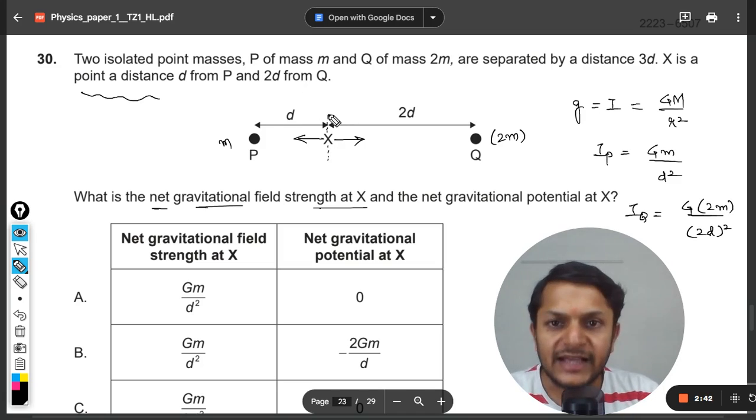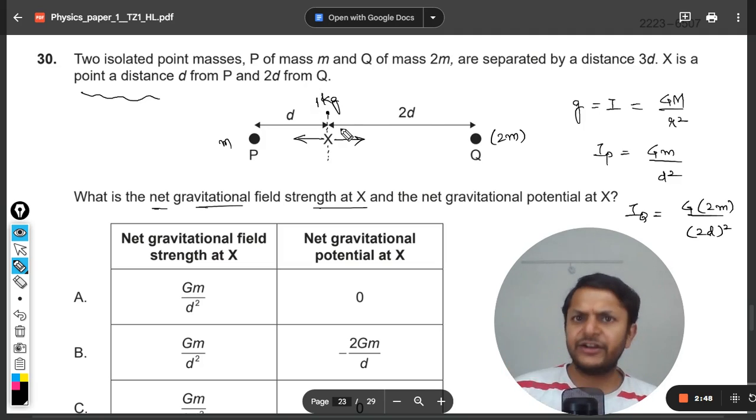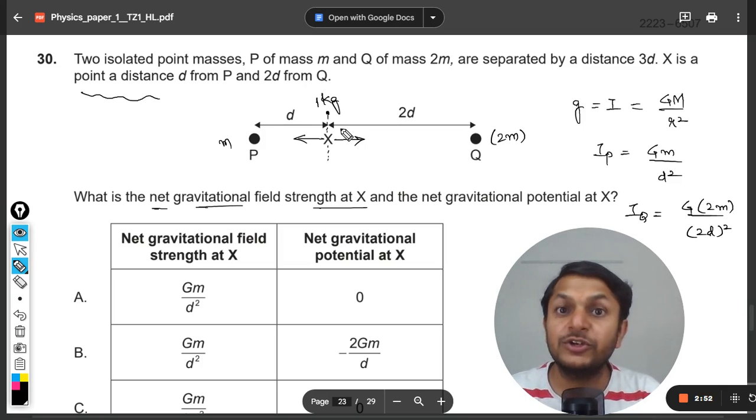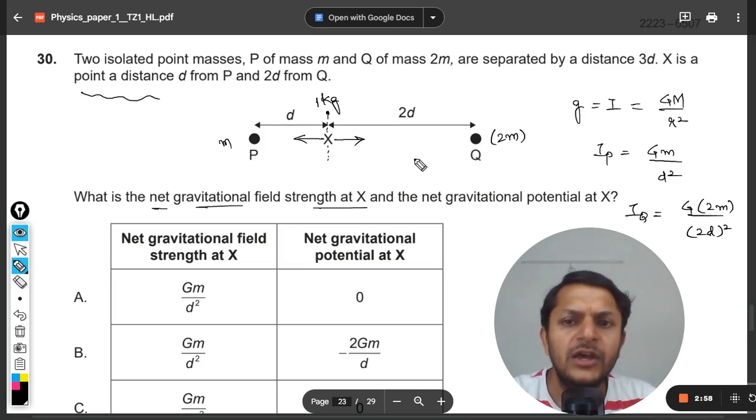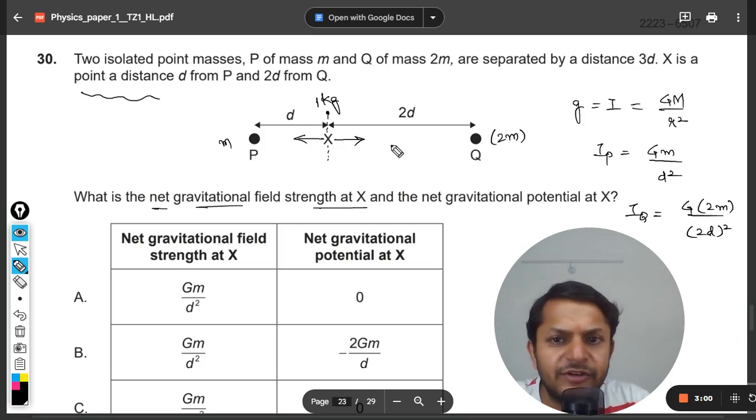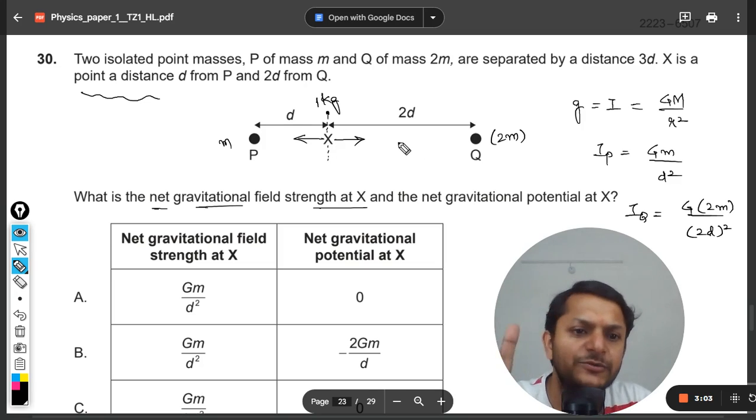When I'm saying attracting, you might be asking who is getting attracted because nothing is placed at point X. Yes, but when we want to find these kind of things, we just assume unity, unit mass there. Or you can, like in the field of electricity, assume it to be unit positive charge. Here you can assume a positive mass, unit mass.